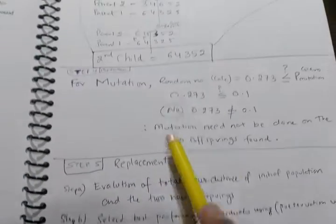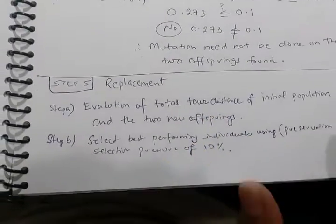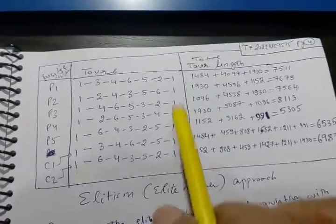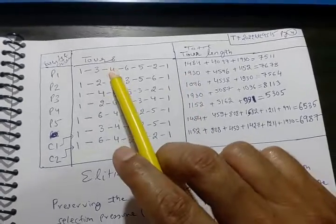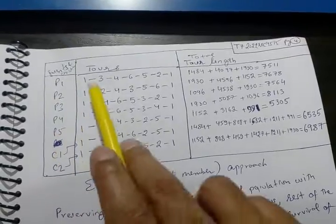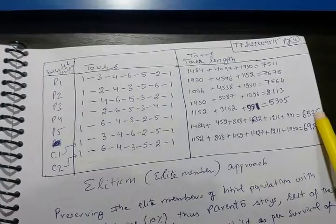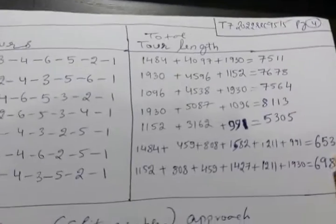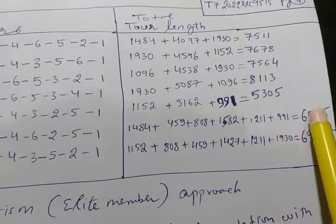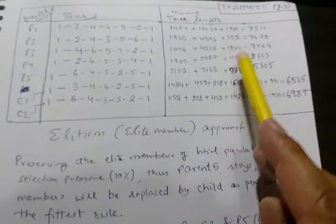Next step is replacement. Are these children fit enough to replace the population? Let us see. There is a selection pressure also. This is the initial population of size 5 with these tours and tour lengths. The children have these tour lengths, and clearly you can see that the tour length is lesser than these.